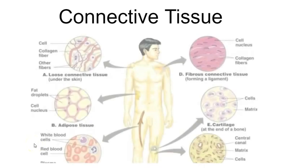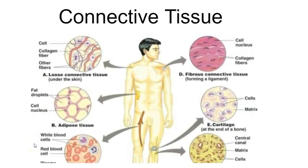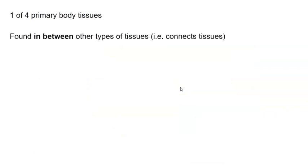There are four types of tissues. We've already studied epithelium. Now let's look at connective tissue. Connective tissues share common features and common embryonic origin, but you can think of them as a catch-all category. They're found everywhere — in the skin, fat, blood, bone, cartilage, ligaments, and tendons. It's one of the four primary types of body tissue.